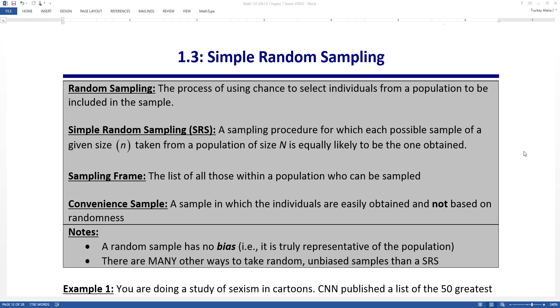Sampling frame is the list of all these people within the population who could be sampled. For example, let's say we want to talk about all the students that are taking classes at Jackson College this fall. The sampling frame might be the list of all college students at Jackson College in the fall. If you have some kind of random procedure to choose a sample size of, let's say, 100 from that population of 5,000, so every population of size 100 is just as likely as any other sample of size 100 to be taken from that population, that would be a simple random sample. The frame would be the list that you would go to to get that sample from.